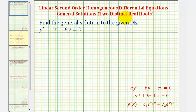Welcome to three examples on how to solve linear second order homogeneous differential equations with constant coefficients. For these examples, the characteristic equation will have two distinct real roots.